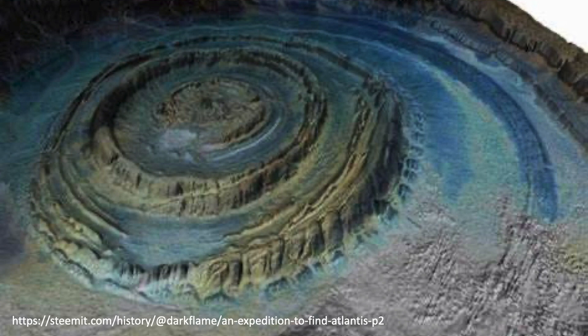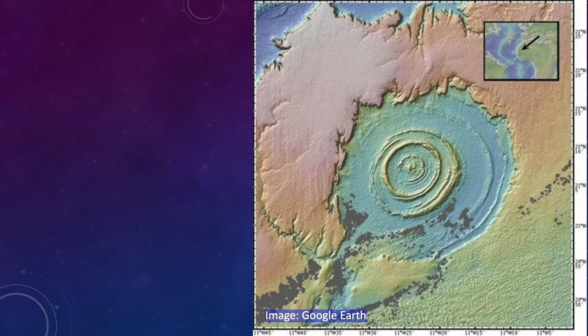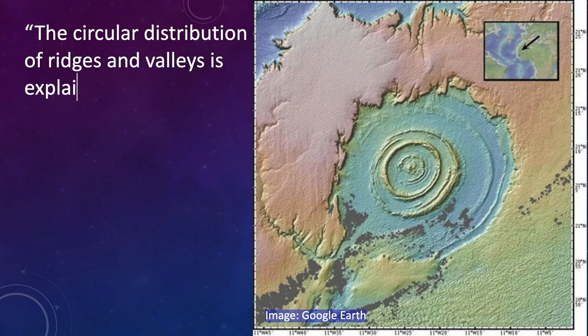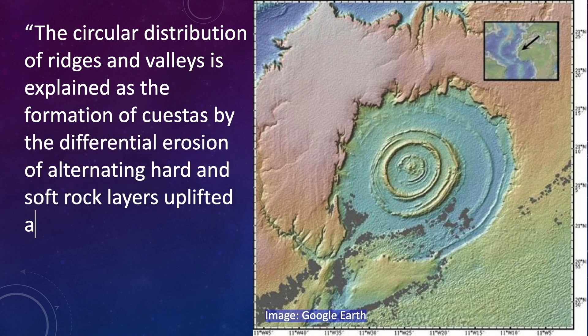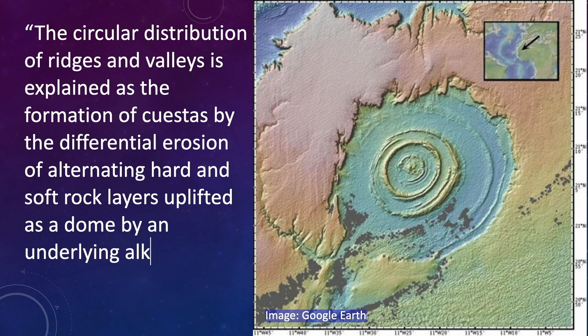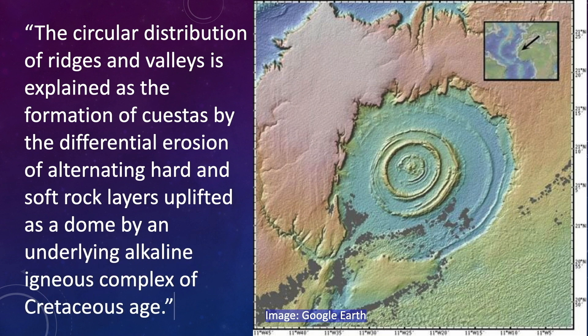Now let's have a look from the less exciting but more explanatory modern perspective based on material reductionism. According to the Wikipedia article on the Richat Structure, the circular distribution of ridges and valleys is explained as the formation of cuestas by the differential erosion of alternating hard and soft rock layers, uplifted as a dome by an underlying alkaline igneous complex of Cretaceous age. How's that for material reductionism?